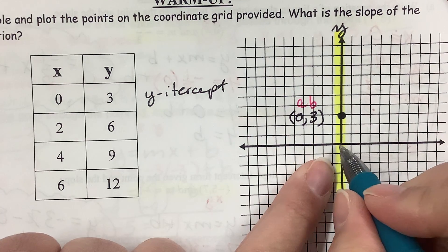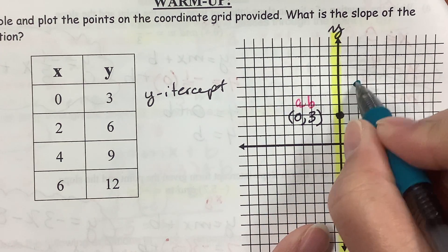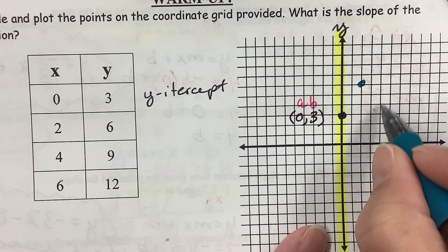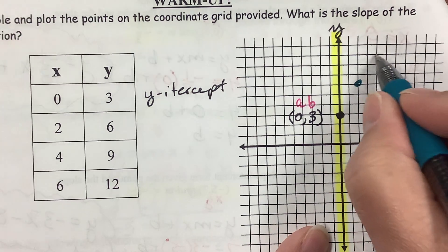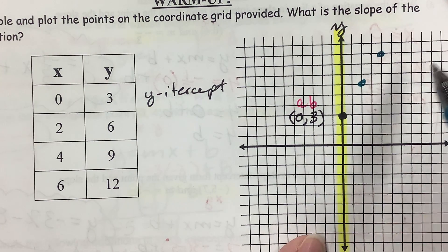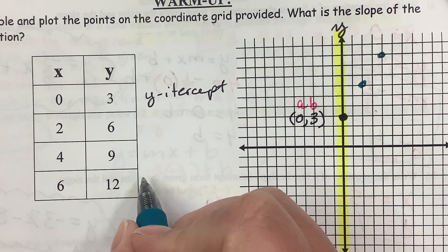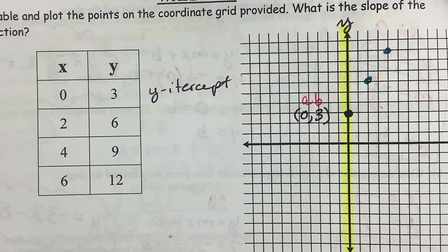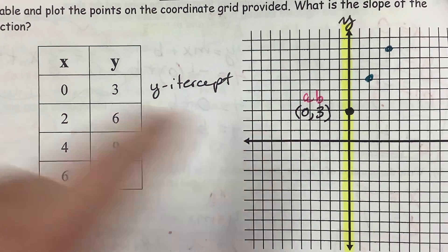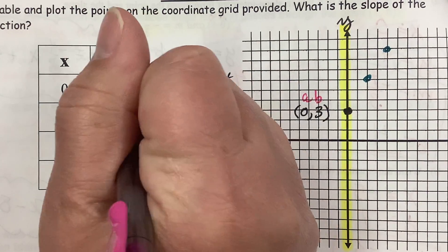Okay, so let's graph some more points here. 2, 6. 2 to the right, up 3, 4, 5, 6. 4, 9. 2, 4, 3, 6, 7, 8, 9. And 6, oh I can't do 6, 12. I don't have enough dots. I can't really graph this last one. But I can find the slope from here. So, I know the y-intercept is b. Y-intercept b equals 3.